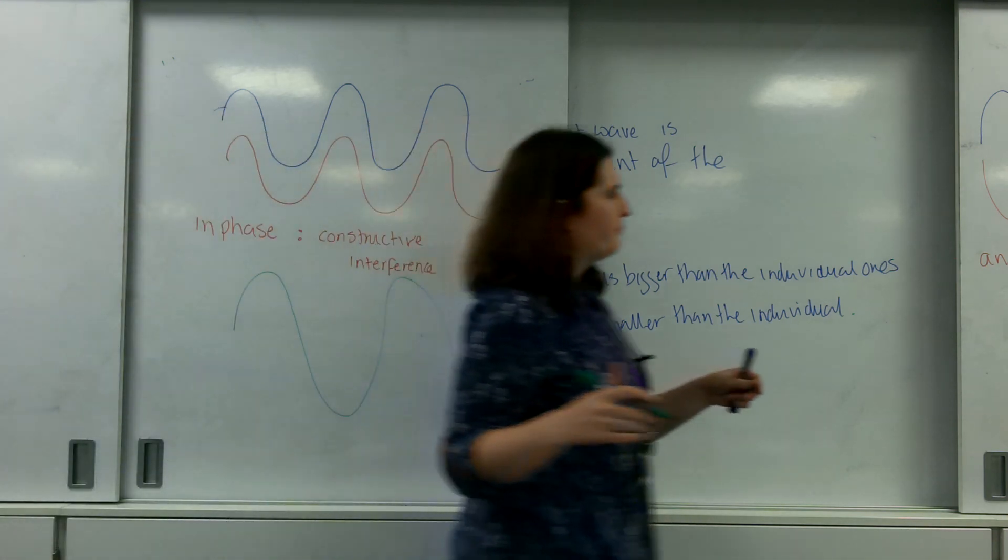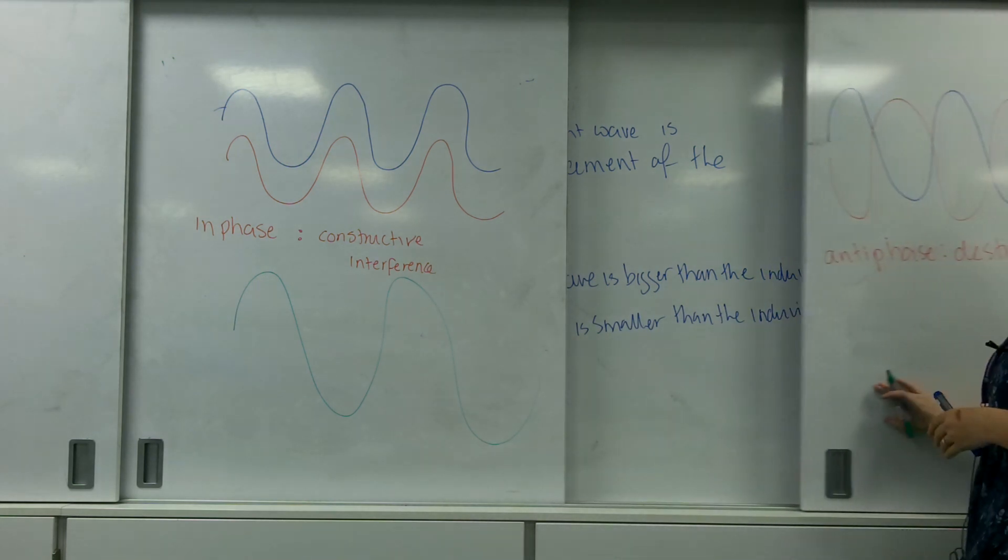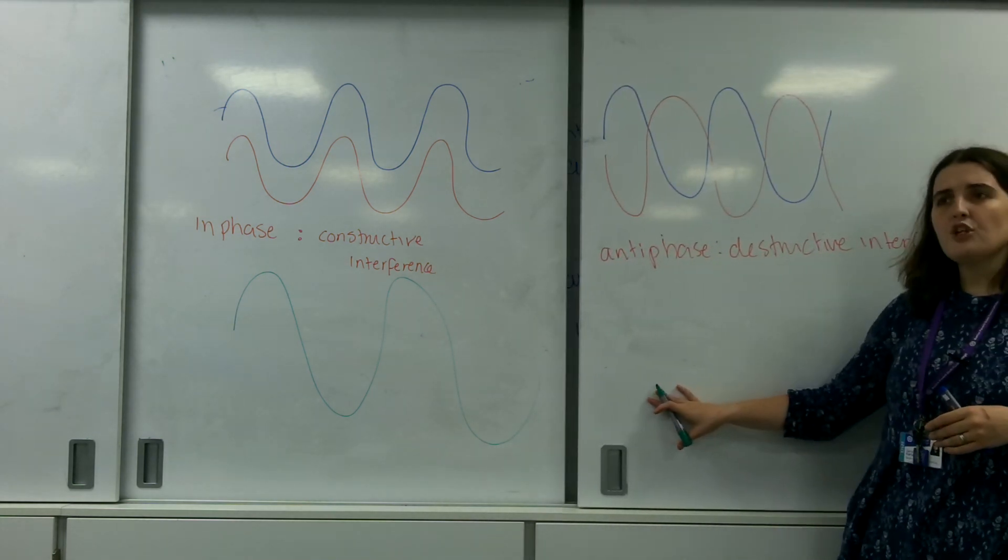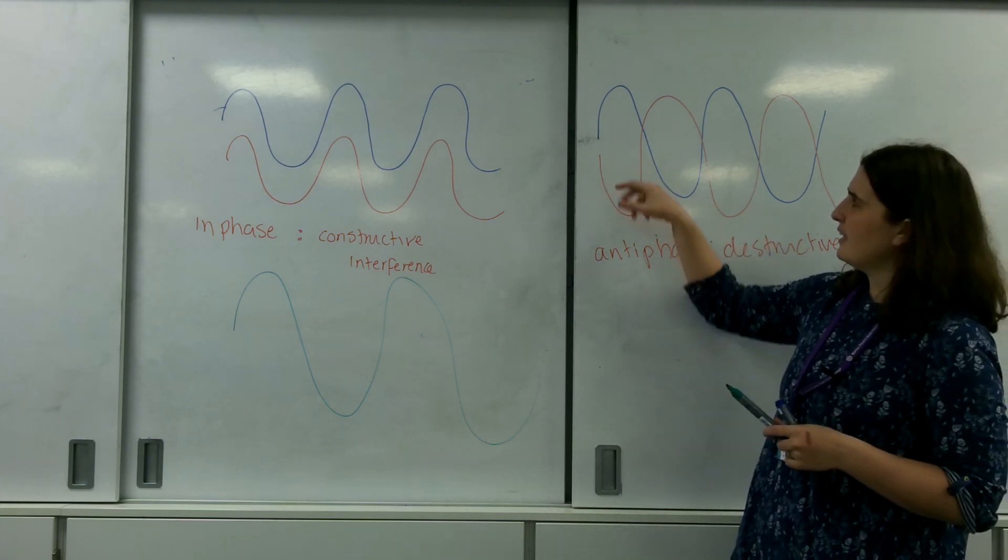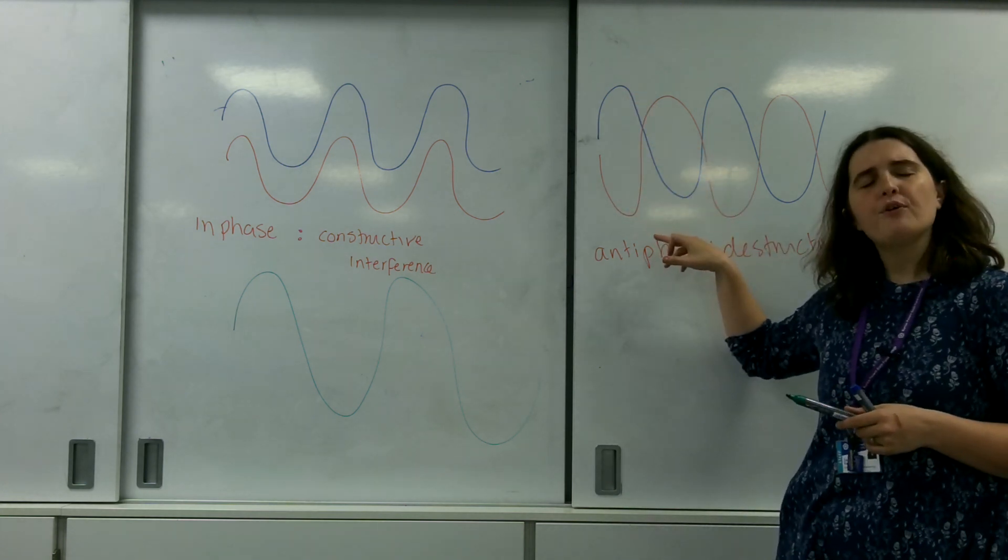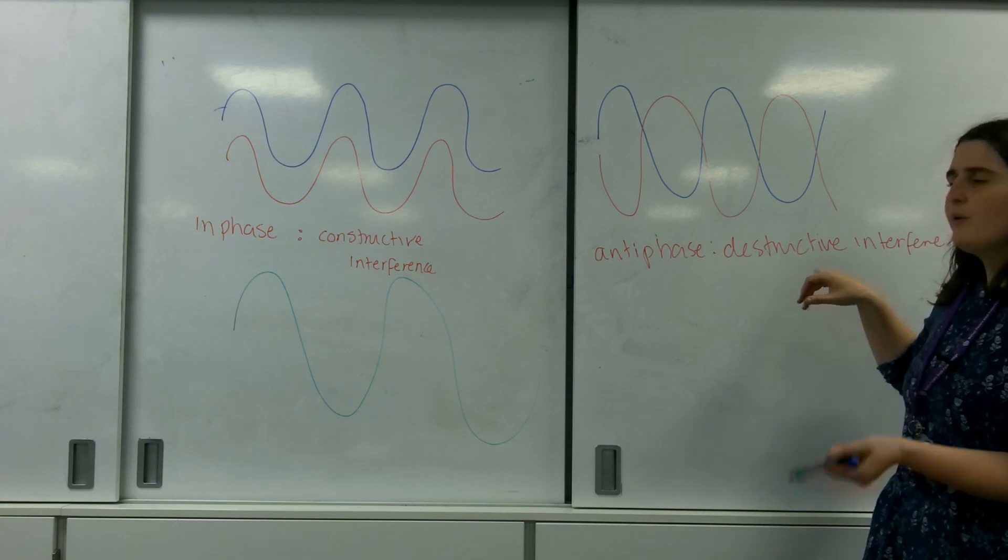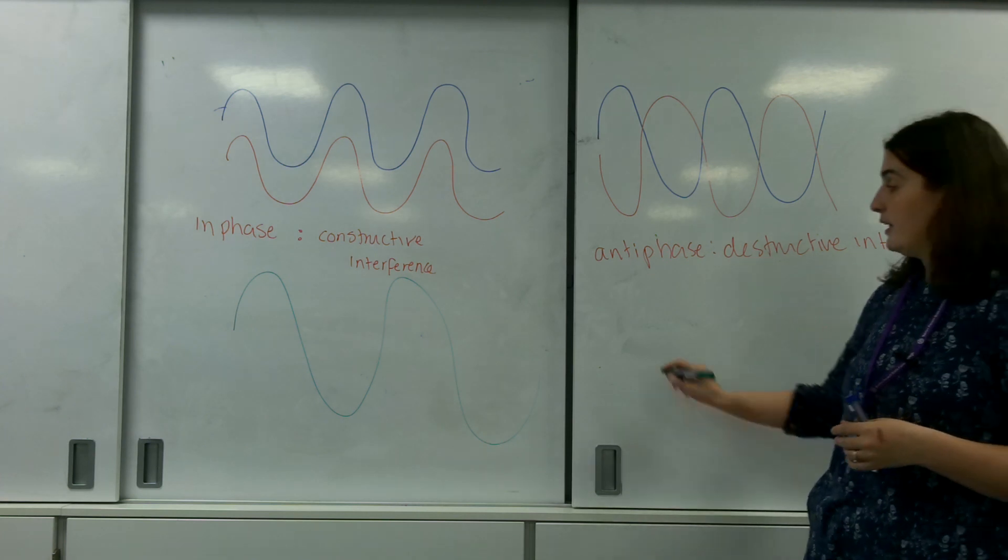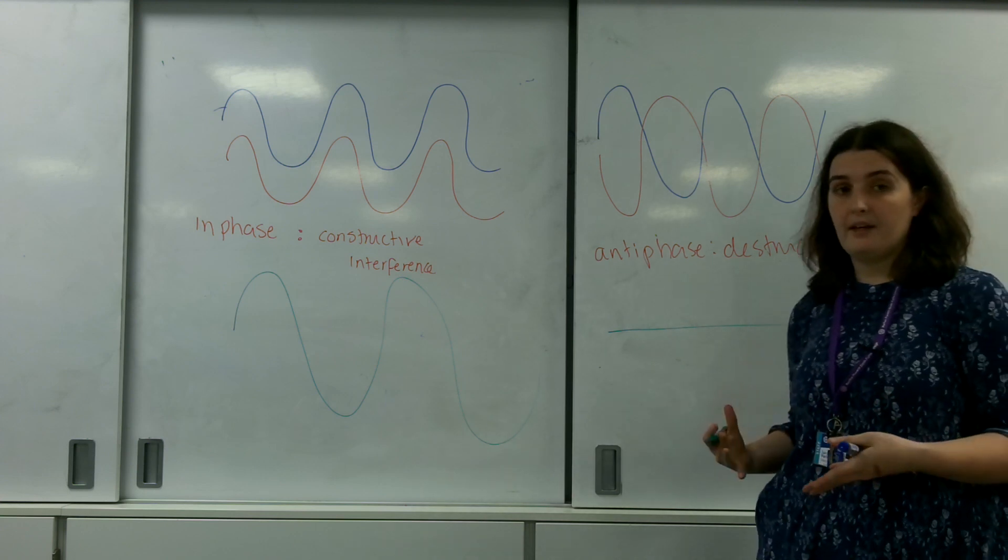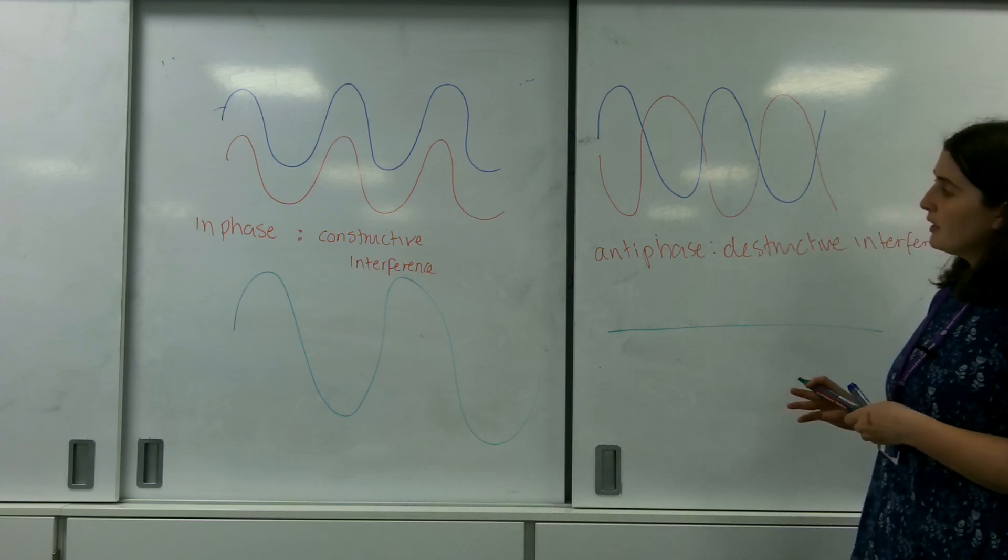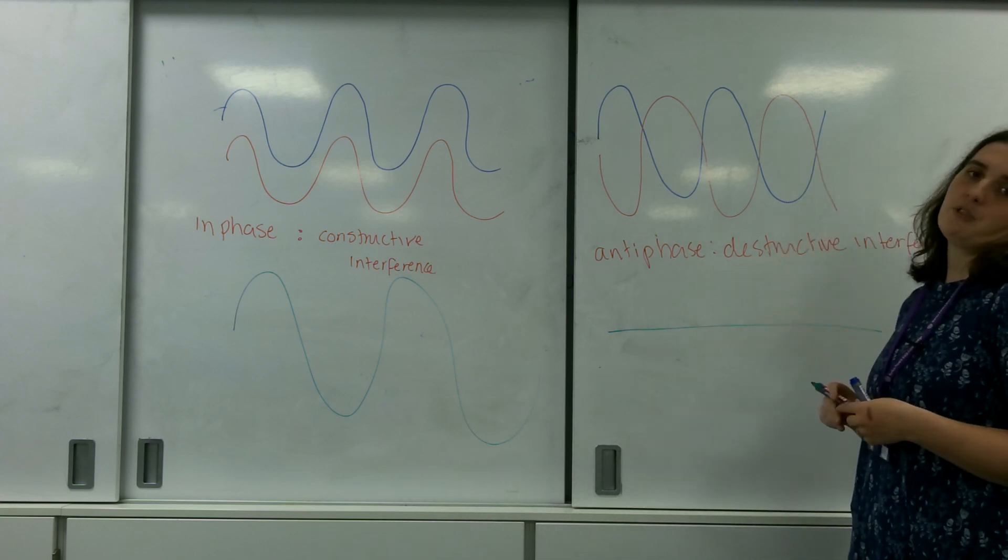Whereas, if they met like this, this is known as antiphase. As you can see here, a peak is meeting a trough. They will interfere destructively. And there would be nothing there. This would be maximum destructive interference.